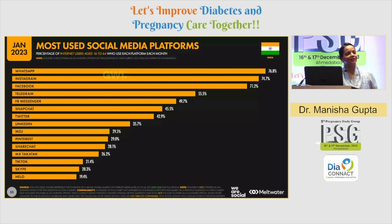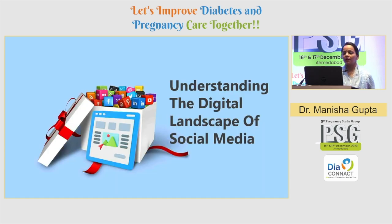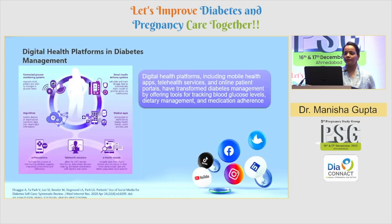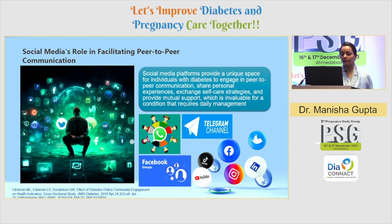I'm an Instagrammer too, and I keep making reels just to create more awareness in terms of diabetes and endocrine disorders. The favorite social media platforms are Instagram, WhatsApp, Facebook, and Telegram at 4.3%. LinkedIn is at 1.7% for professional networking. Understanding the digital landscape: digital health platforms — as Dr. Rami spoke about — help in diabetes management, peer group support, medication adherence, and dietary management. Social media facilitates peer-to-peer communication, and communities providing peer group support play a major role in cases of GDM.